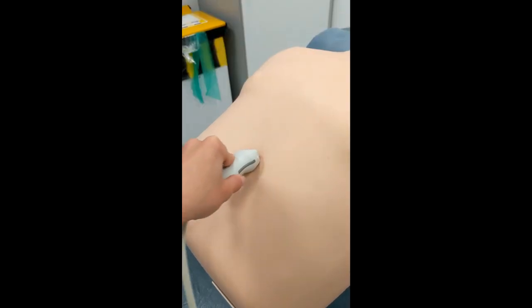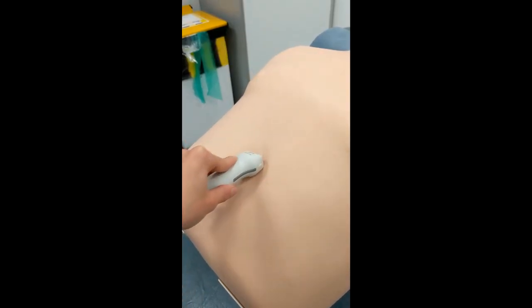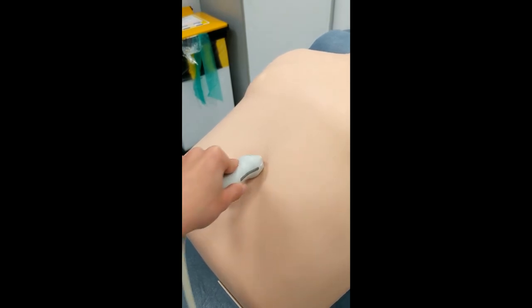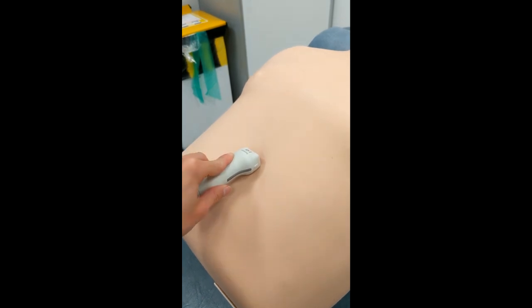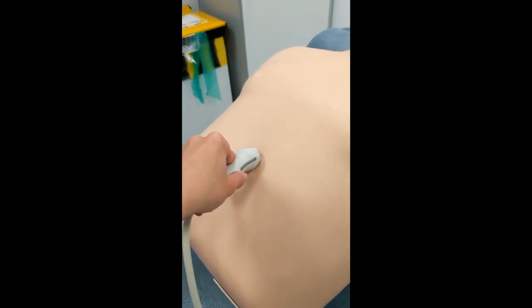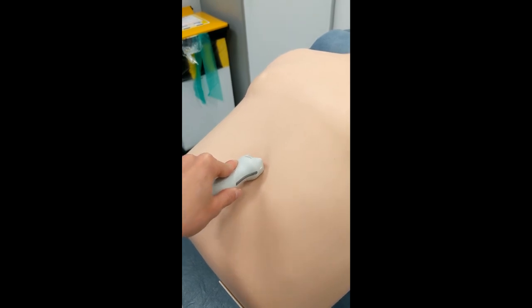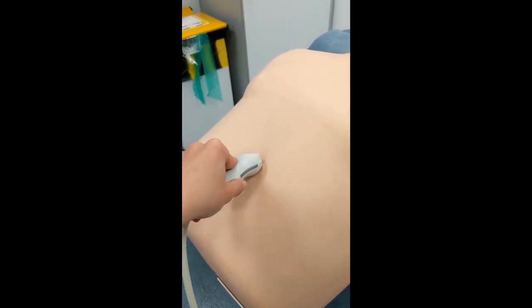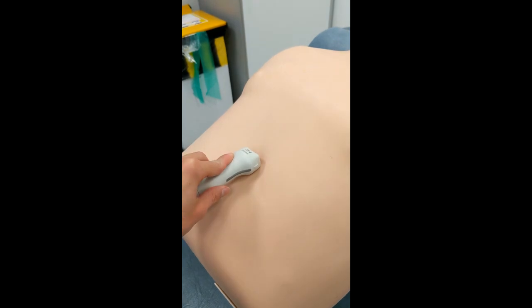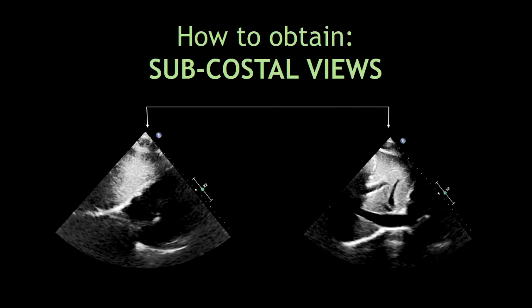In this video, I'm demonstrating how to obtain the different subcostal views. Just tilt the probe to the right side to visualize the inferior vena cava. The index marker should always be pointing to the left. And this is how you can obtain the two different subcostal views. Thank you for watching. Don't forget to subscribe and like this video.